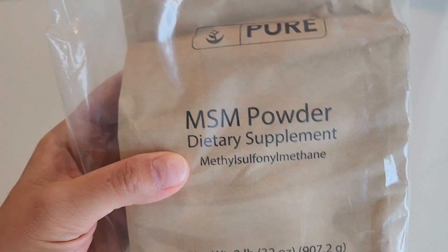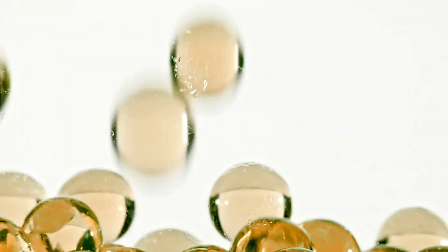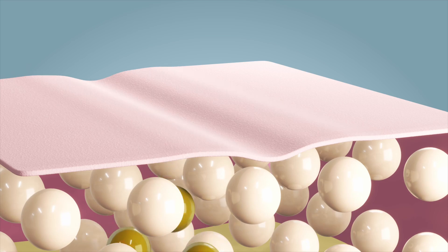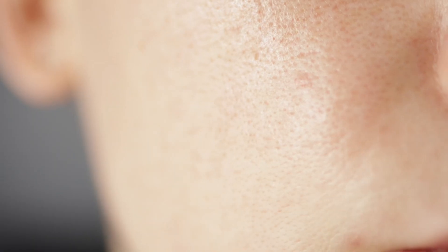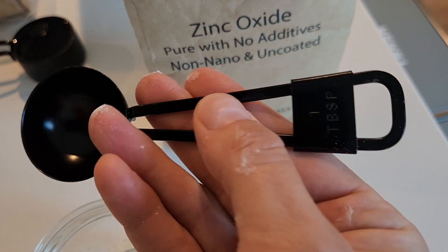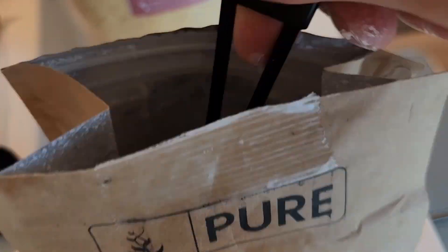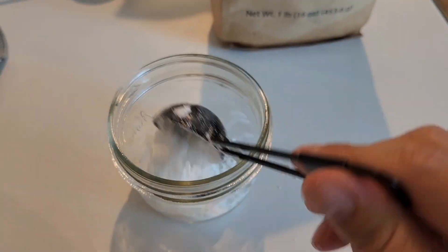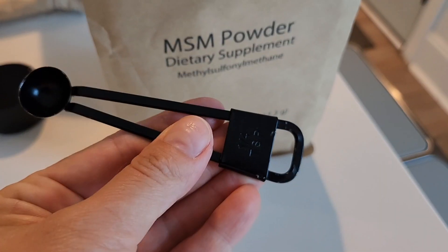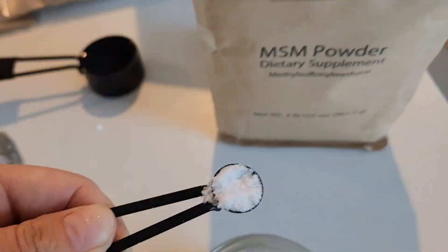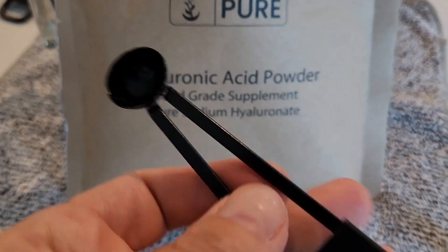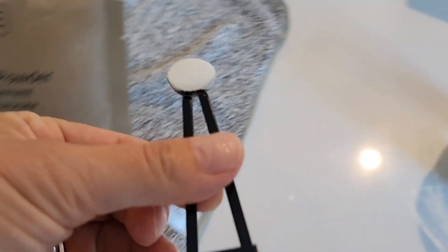MSM powder enhances skin health by promoting collagen production, improving elasticity, and reducing inflammation. Niacinamide improves the appearance of enlarged pores, uneven skin tone, and fine lines. For this recipe I used two tablespoons of zinc oxide, one tablespoon of white turmeric powder, one fourth teaspoon of MSM powder, one fourth teaspoon of niacinamide, and one fourth teaspoon of hyaluronic acid powder.